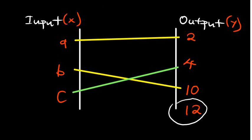Now if you look at this function, this function is not an onto function. Why? Because there is an output that is not mapped to an input. So this is not an onto function, but it's a function.